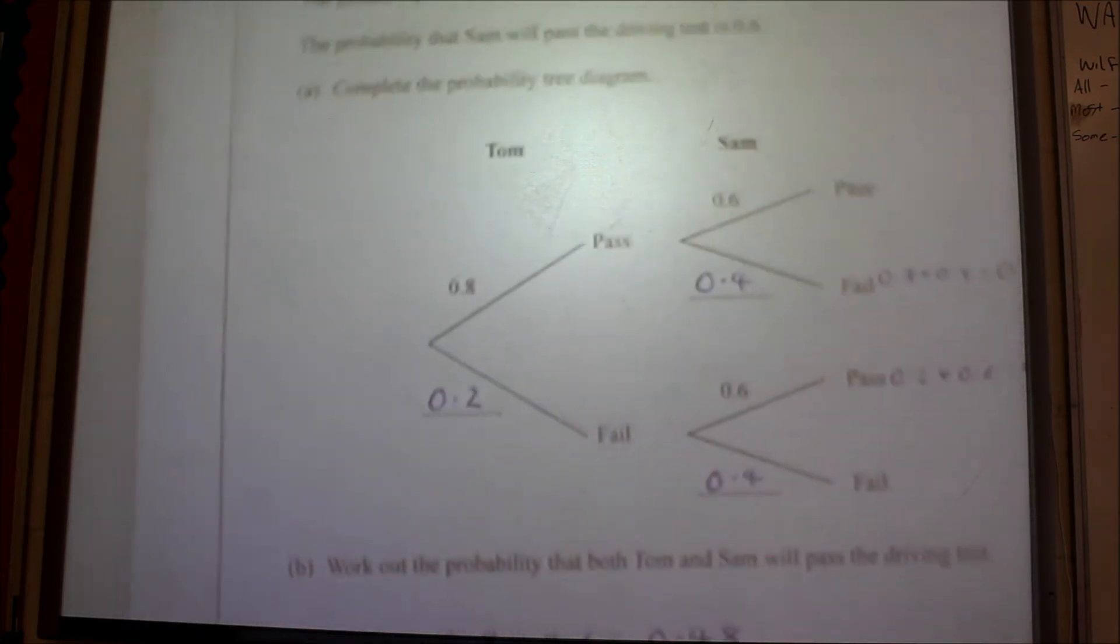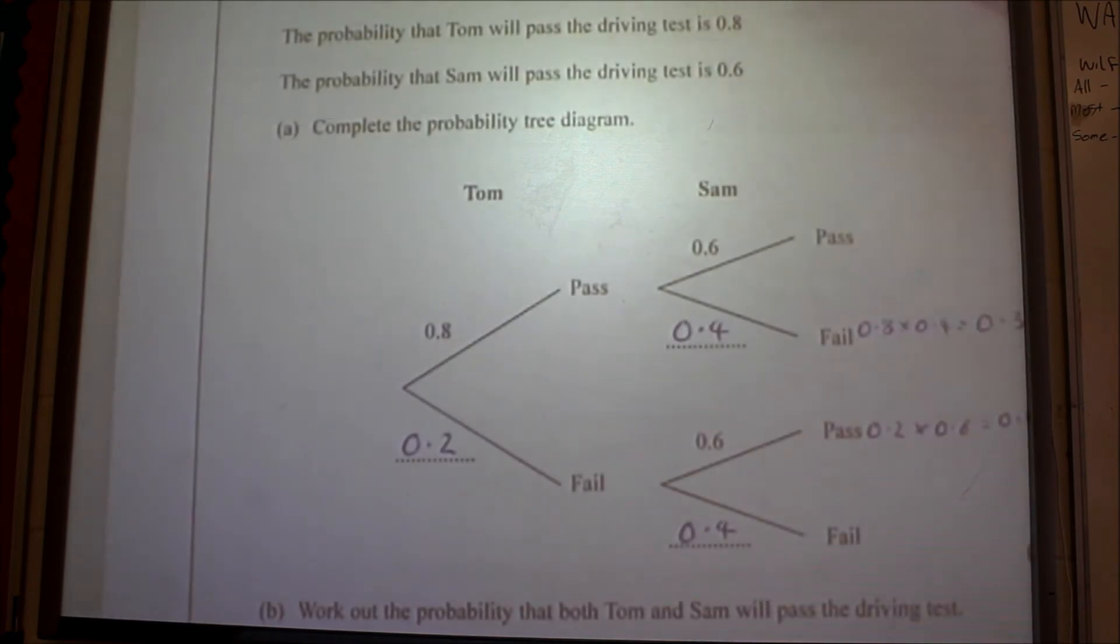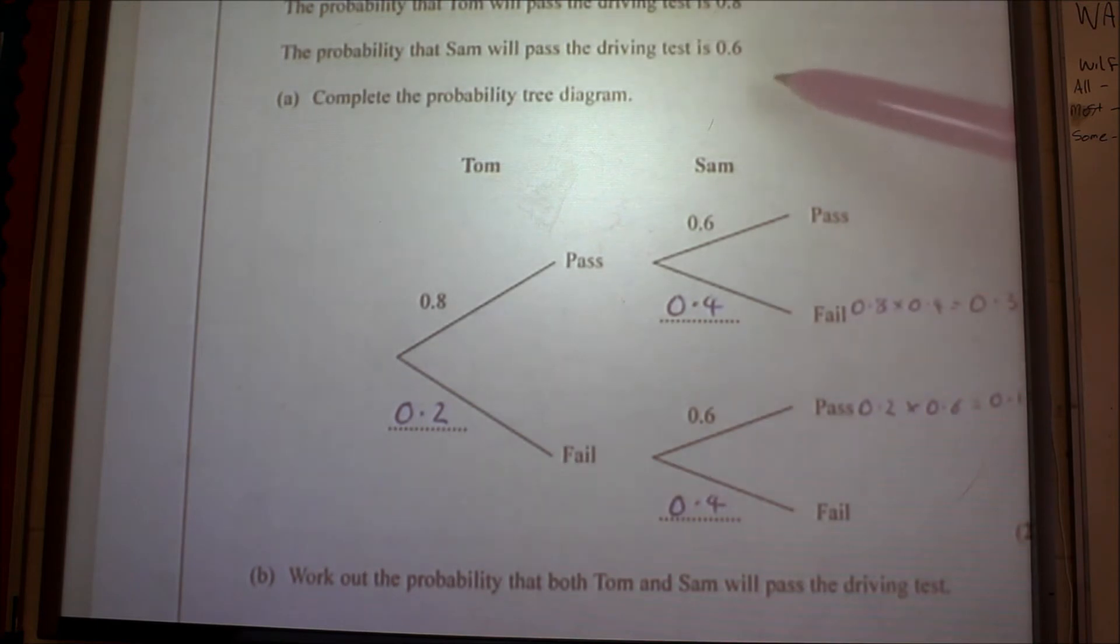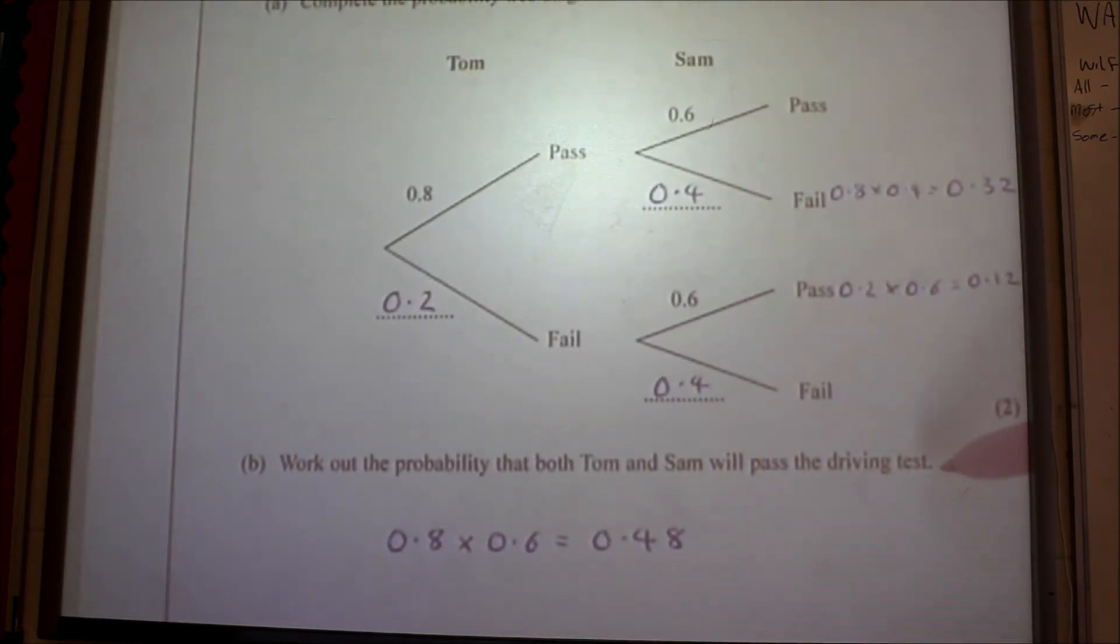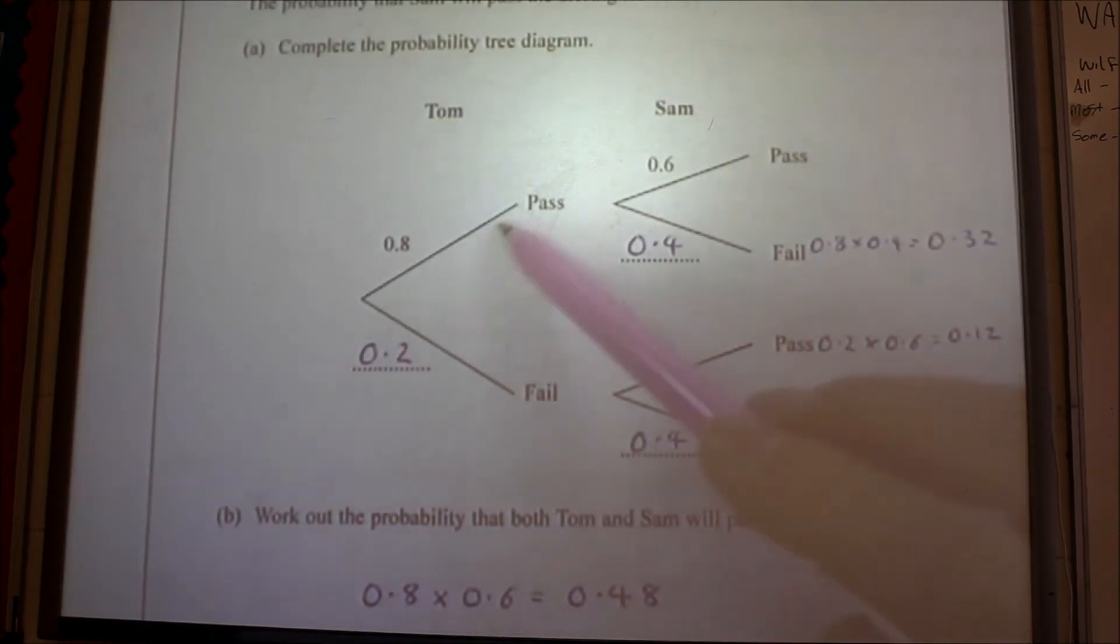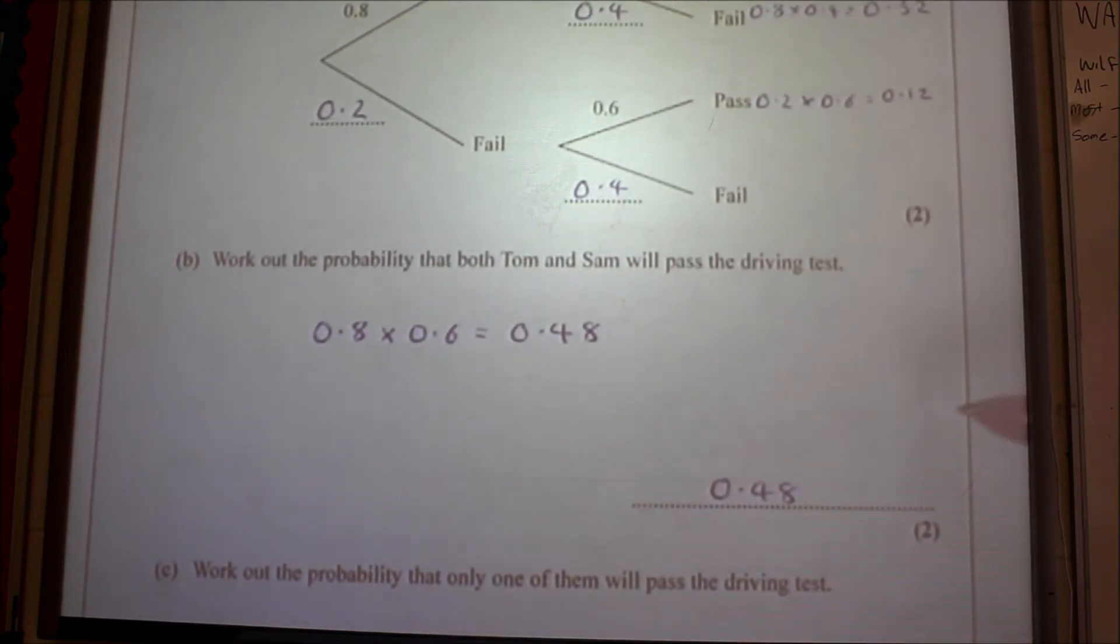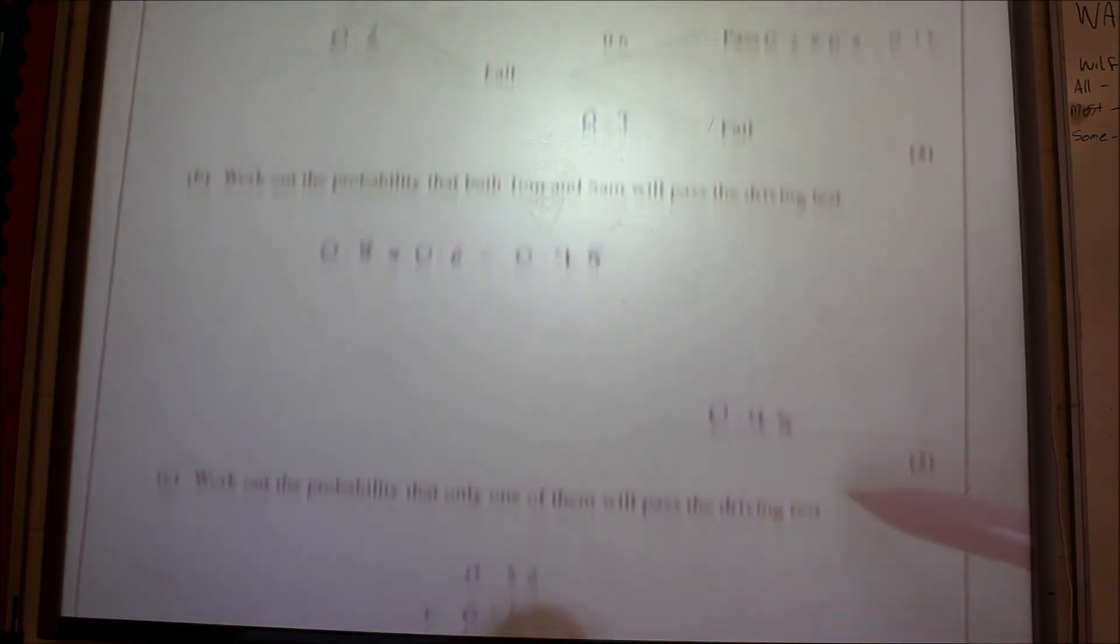Question number four. Tom and Sam each take a driving test. Probability Tom will pass is 0.8, so fill that in: 0.2. Sam is 0.6, that'll be 0.4. Work out the probability that both Tom and Sam will pass. So it's pass and pass, so it's 0.8 times 0.6. 0.8 times 0.6 is 0.48.